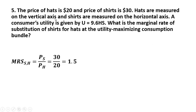Another problem. The price of hats is $20 and the price of shirts is $30. Hats are measured on the vertical axis and shirts, like good x, are measured on the horizontal axis. A consumer's utility is given by the following equation. What is the marginal rate of substitution of shirts for hats at the utility maximizing consumption bundle? At the utility maximizing bundle, the MRS of shirts for hats equals the ratio of the price of shirts to the price of hats, which is $1.50.